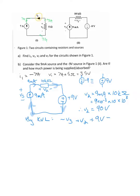We know that all of that is equal to zero. From before we know that V2 is 90 volts, so we can write: minus V3 plus 90 volts plus 9 volts equals zero. Therefore V3 is equal to 99 volts.